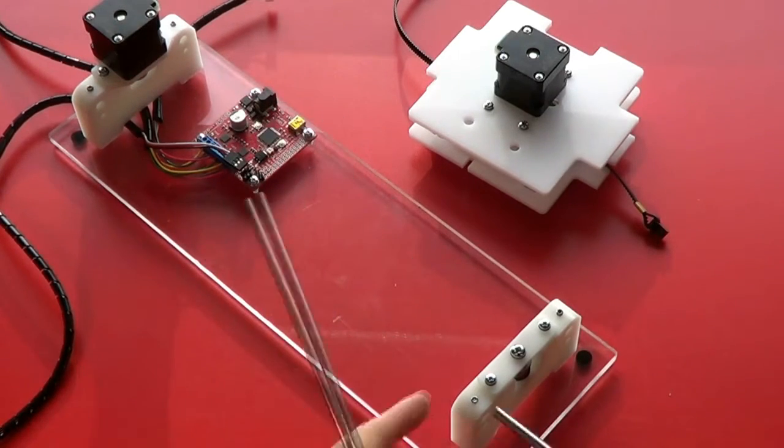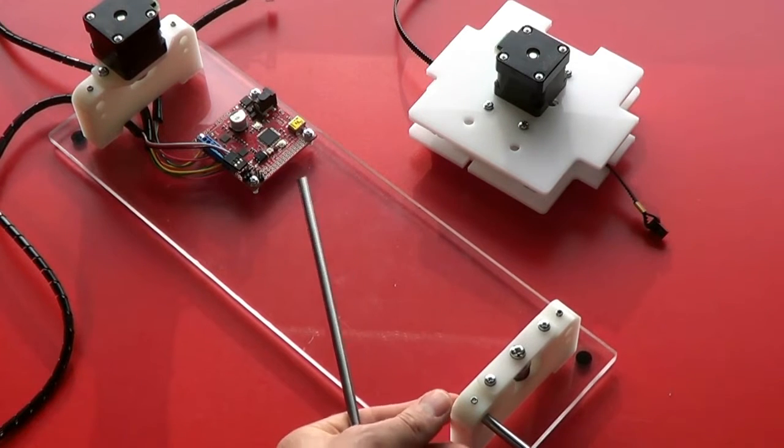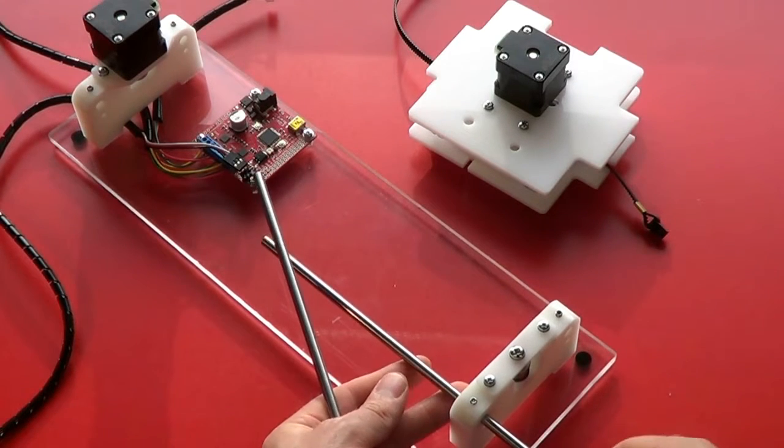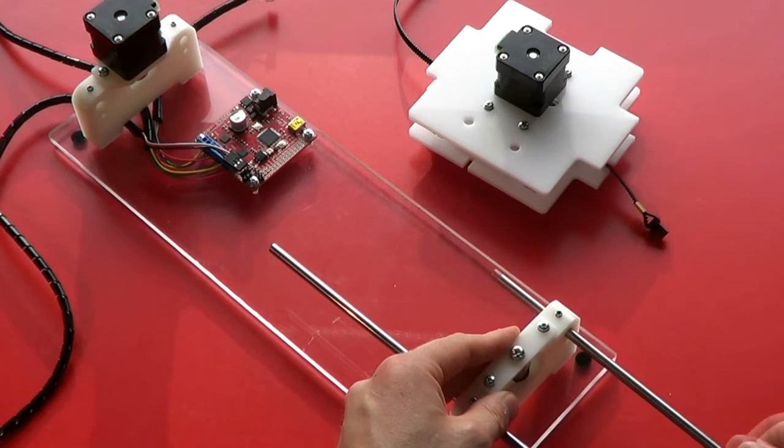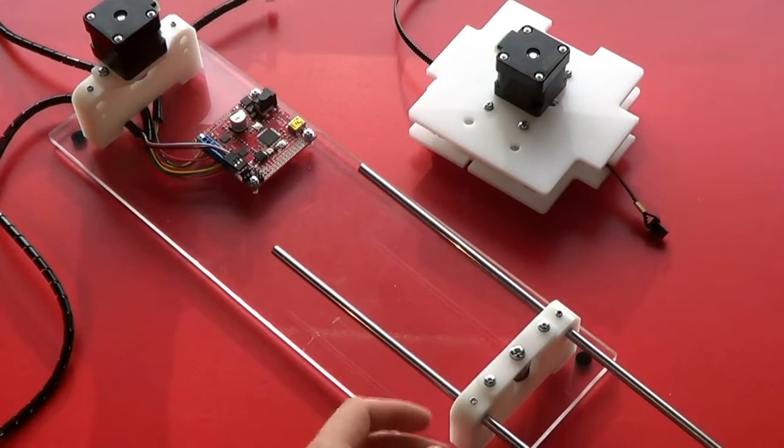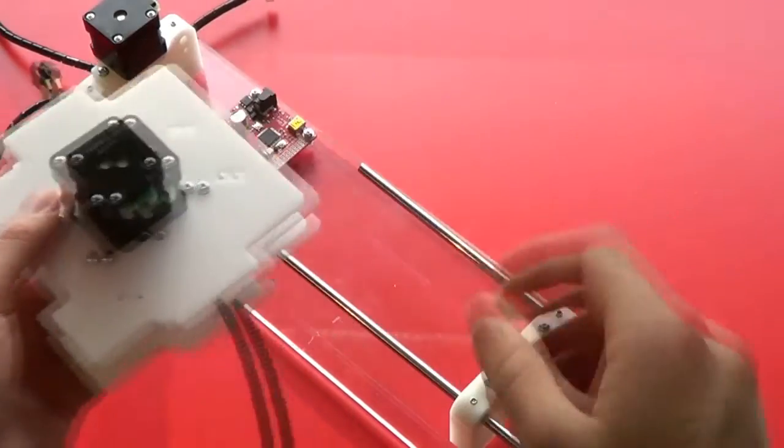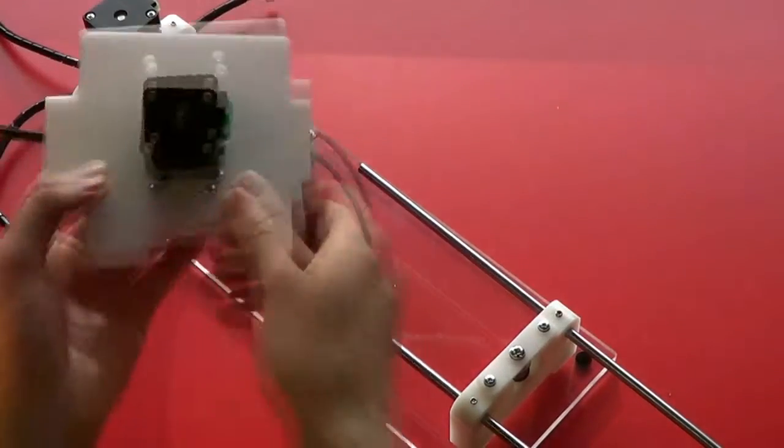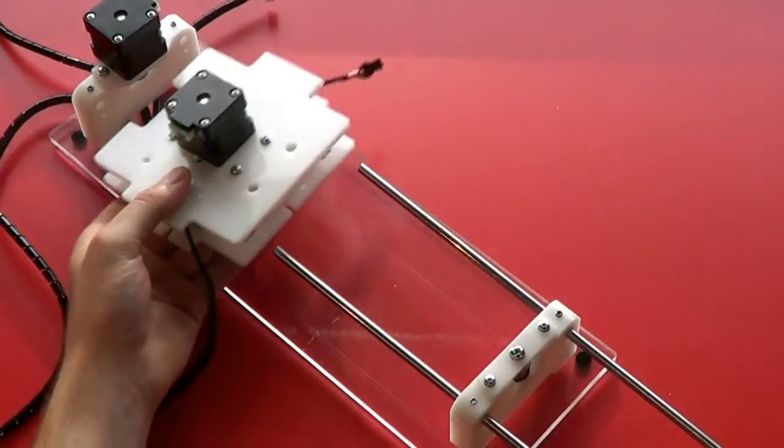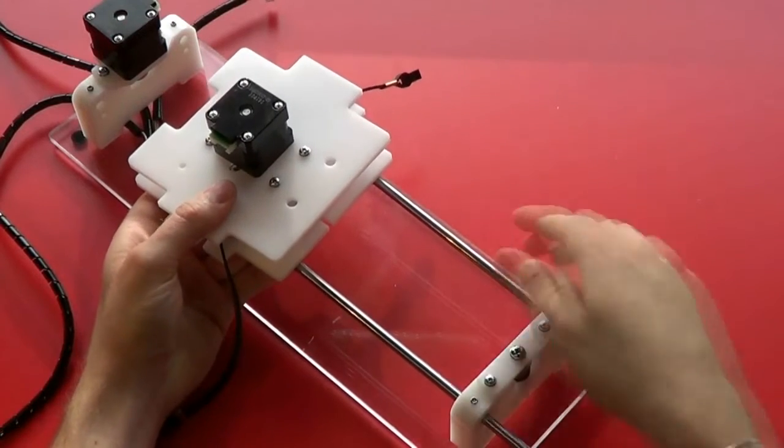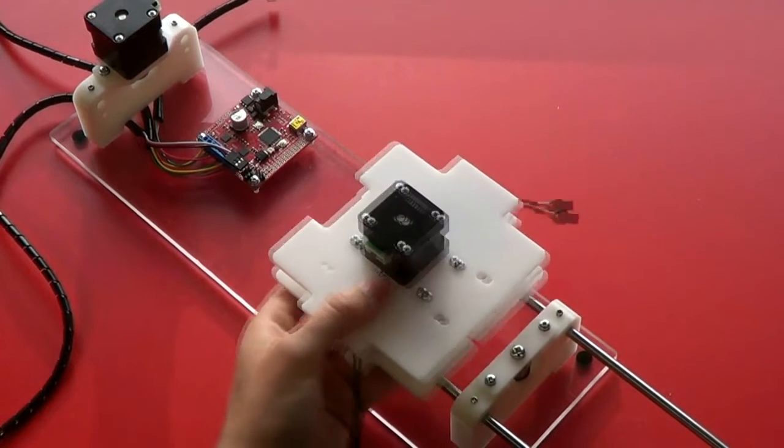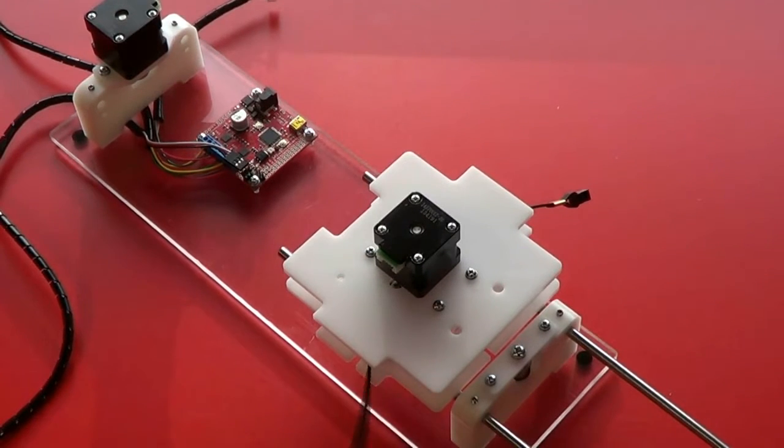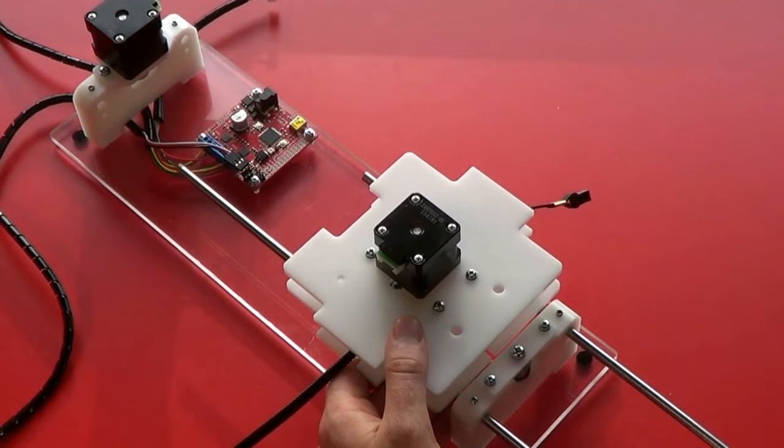We want to push the linear rails through the right-hand X support until they're about halfway along the base. We then can slide the carriage onto them and we can then push the rails the rest of the way.